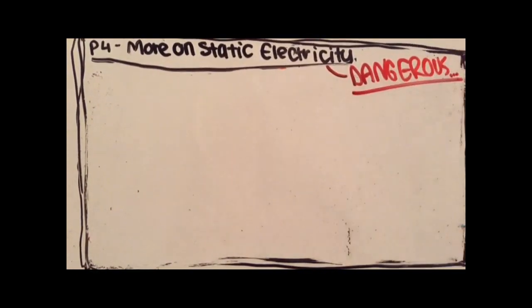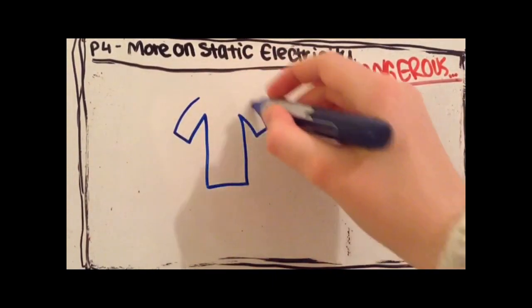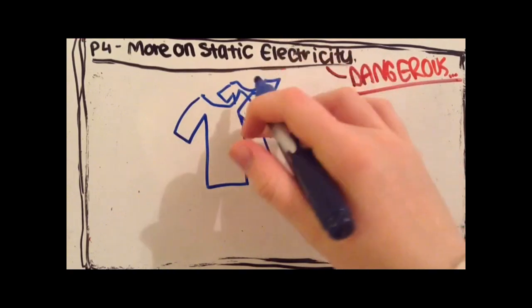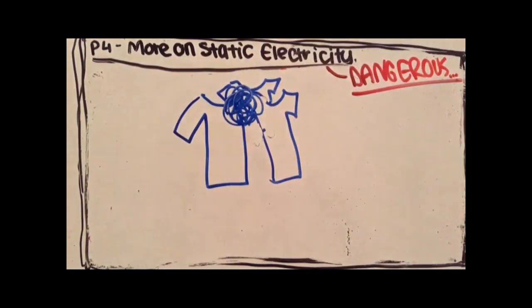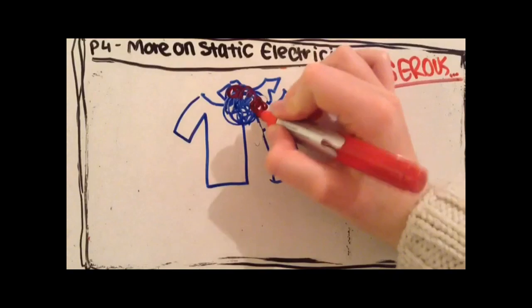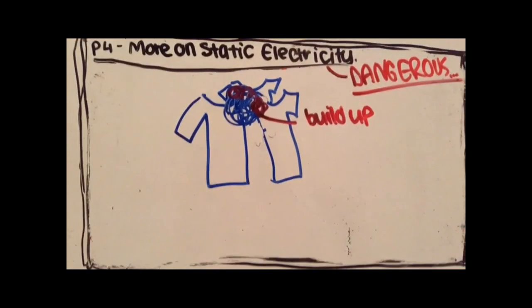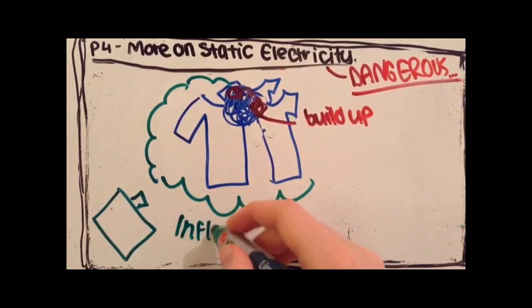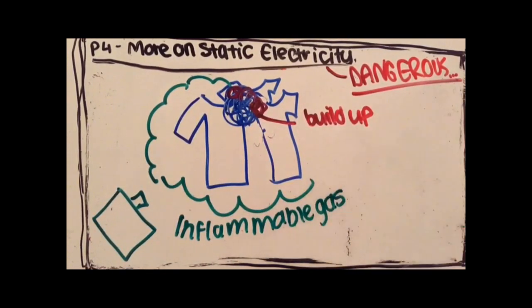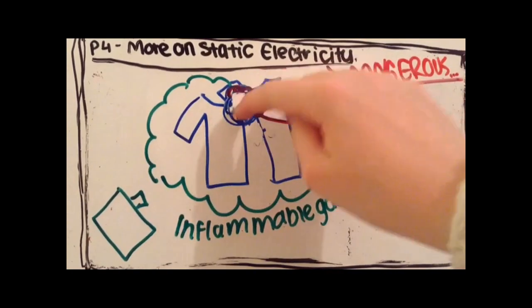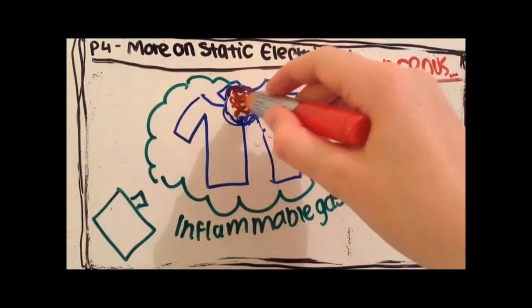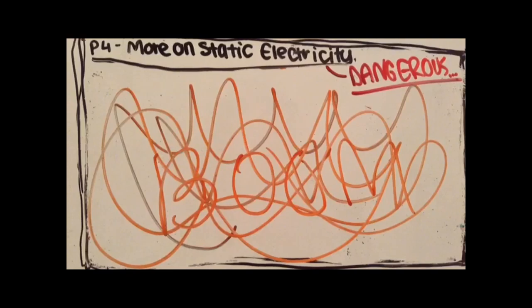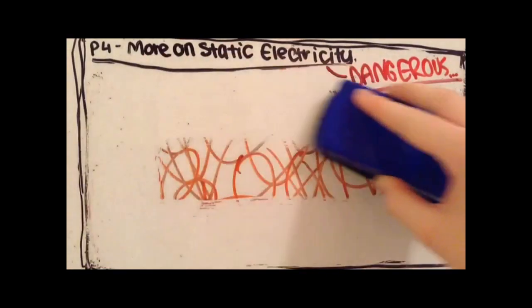Static electricity can also be dangerous. For example, if a lot of charge builds up on clothes. A large amount of static charge can build up on clothes made out of synthetic materials if they rub against other synthetic fabrics. Eventually this charge can become large enough to make a spark. And if it is near any inflammable gases or fuel fumes, this will lead to an explosion. And this is very dangerous.